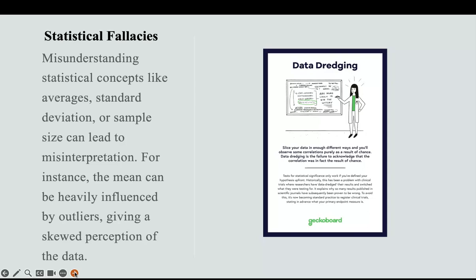Statistical fallacies. Understanding statistical concepts like average, standard deviation, and sample size is important to avoid misinterpretation. Be mindful that a measure of central tendency, like the mean, can be influenced by outliers. For example, a community with houses averaging around $60,000 — if there is one house worth $4 or $5 million in the middle, that can skew the mean average. Statistical tests for significance can only work if you define your hypothesis up front.